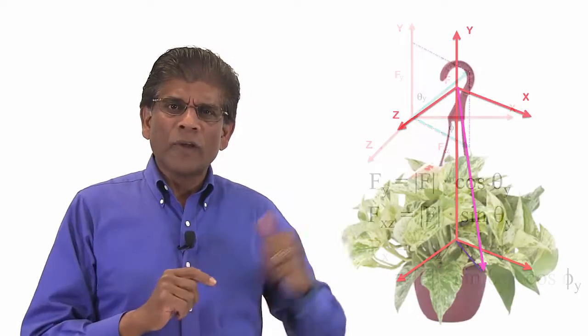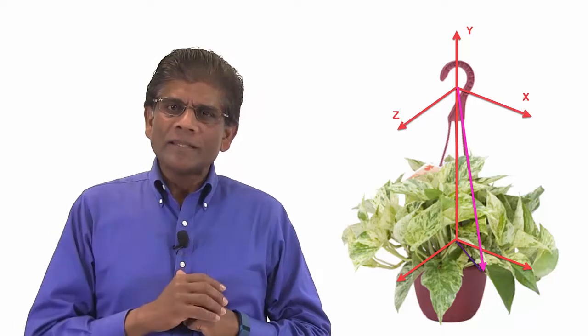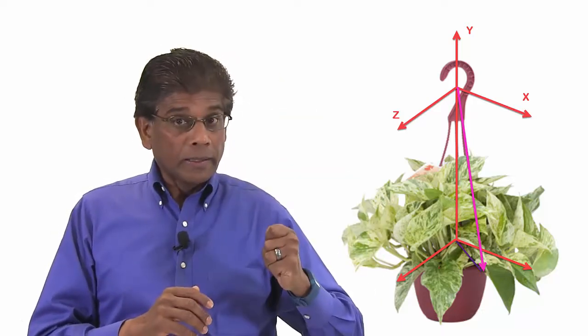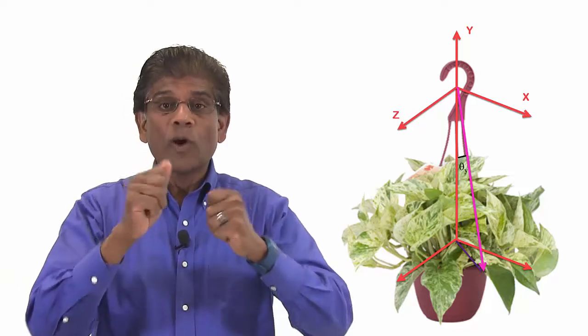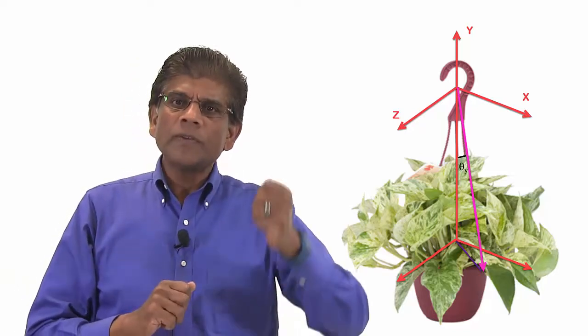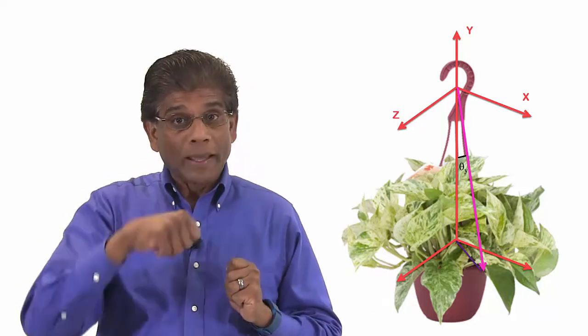In case of our flower pot, for simplicity, let's say the angle between the vertical line and each row is the same and it is theta sub y. The angle between the projection of the force F1 on x-z plane is phi.